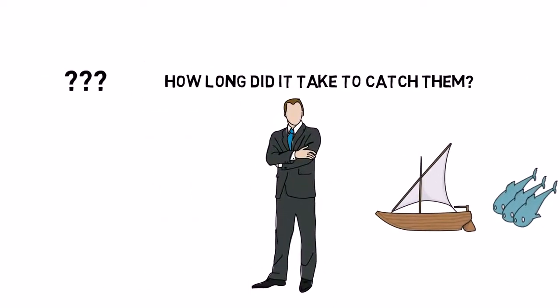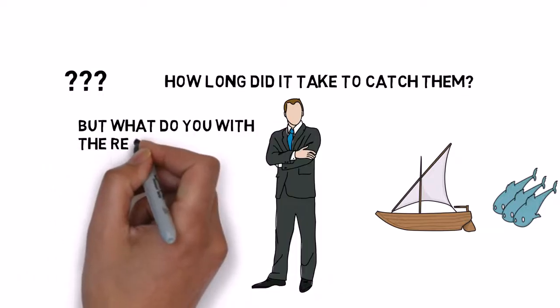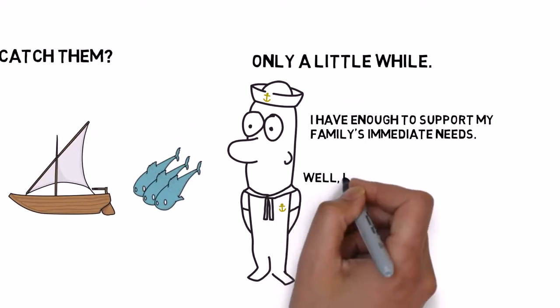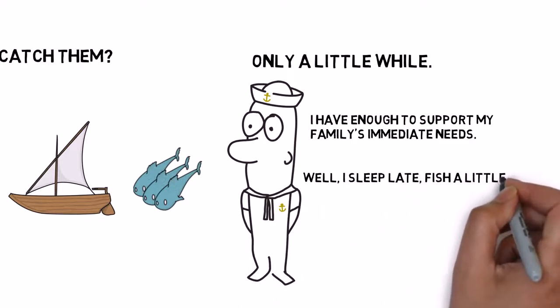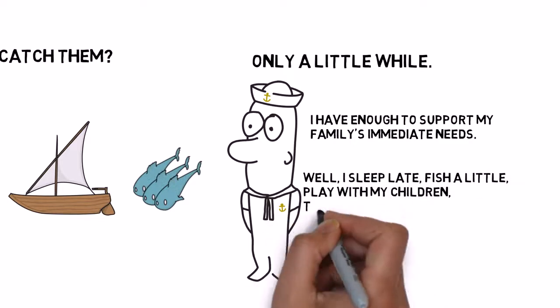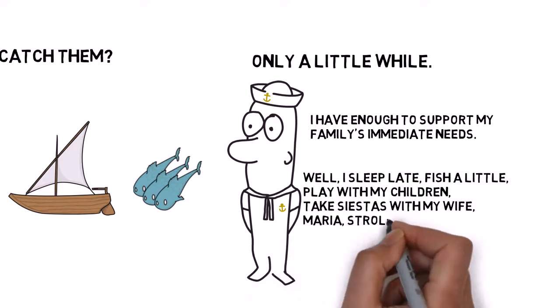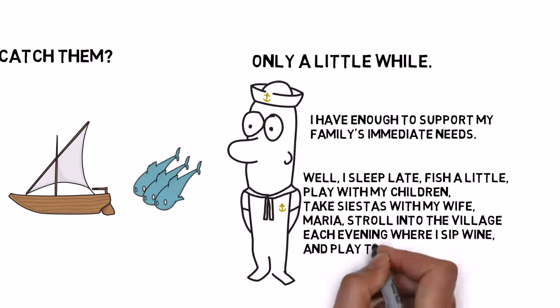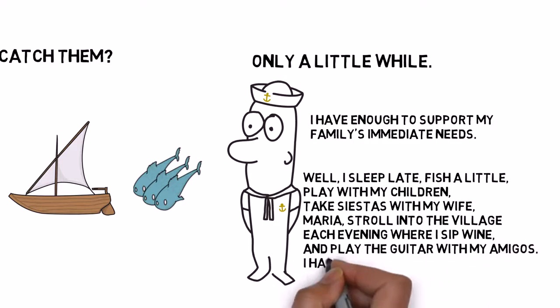The American then asked, but what do you do with the rest of your time? The Mexican fisherman then went on to say, well, I sleep late, fish a little, play with my children, take siestas with my wife Maria, stroll into a village each evening where I sip wine and play the guitar with my amigos. I have a full and busy life.